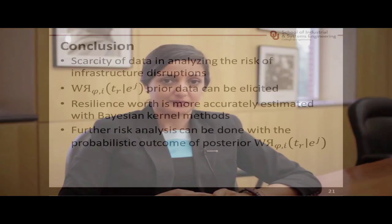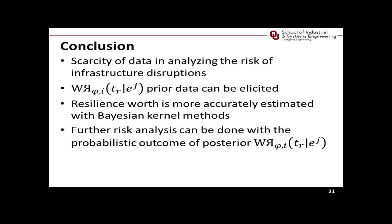Analyzing the risk in infrastructure systems suffers from the scarcity of data due to the nature of the problem dealing with disruptive events that do not often occur. Using a Beta Bayesian kernel model is very beneficial for determining the importance measure of components in an infrastructure system. On one hand, the prior data required can be easily elicited from risk managers. On the other hand, the outcome can be used to make stochastic inferences. Thank you for watching, and I look forward to meeting you in December for my first time at the SRA Annual Meeting in Baltimore.